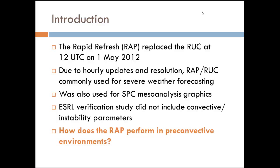Before this was released, ESRL did a verification study. As far as I know, it didn't include any convective or instability parameters — it's possible they looked at them but they were not released. Their verification study also didn't cover the convective season, or at least the part that they released. So there was a question in our minds: how is it going to perform in pre-convective environments, especially since it came out right before the convective season and completely replaced the RUC?